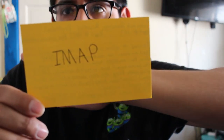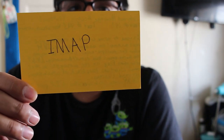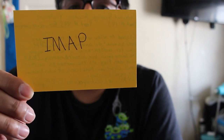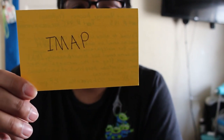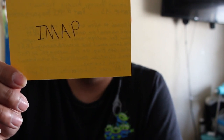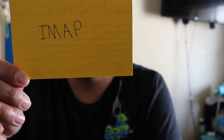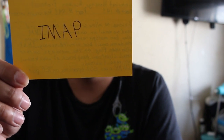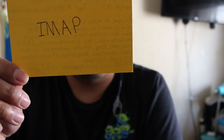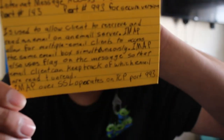Next is IMAP — Internet Message Access Protocol. It can run on port 143 or port 993 for a secure version. It is used to allow clients to retrieve and read email on an email server. IMAP allows multiple email clients to access the same mailbox simultaneously and supports flags on messages so clients can track which emails are read or unread. IMAP over SSL operates on TCP port 993.